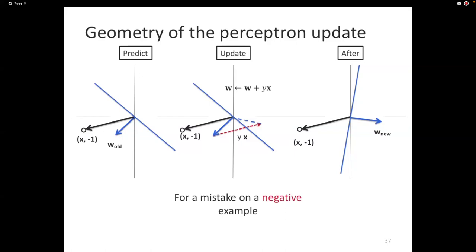For perfectly linearly separable data, the perceptron mistake-bound theorem says that no matter what constant learning rate you use, you will always find a separating set of weights. This is a rather remarkable and somewhat unintuitive result.